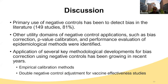In summary, we identified and reviewed 184 studies in pharmacoepidemiology. 81% of these studies used negative controls for the purpose of bias detection. We also identified other utility domains such as bias correction, p-value calibration, and performance evaluations of epidemiological methods. Several key methods have been on the rise in the past few years, particularly the empirical calibration methods and the double negative control adjustment for vaccine effectiveness studies. Thank you for your attention and looking forward to the discussion.